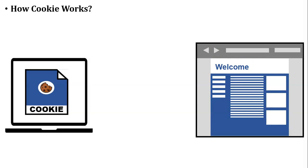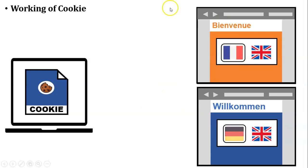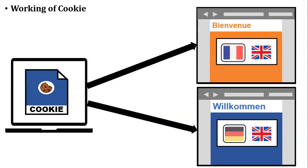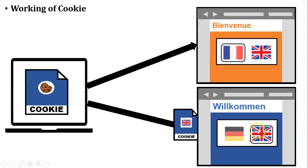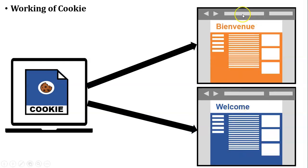Let us take another example. The user wants to access two different websites — one with a default language of French, and another with a default language of German. The German language website was already accessed by the user, so that website's cookie is already stored in the user's browser. When the user accesses both websites, the browser sends the German website's cookie to the web server, so the German website displays in English, while the French language website displays in French.